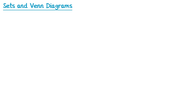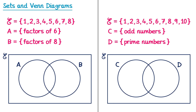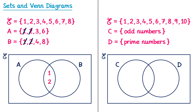Here are two more questions like this for you to try. For the first question, we need the factors of 6 — which are 1, 2, 3, and 6 — and the factors of 8 — which are 1, 2, 4, and 8. Numbers in both sets are 1 and 2, so they go in the middle. Numbers only in set A are 3 and 6. Numbers only in set B are 4 and 8. We've used 1, 2, 3, 4, 6, and 8, leaving 5 and 7 to go outside the circles but still inside the rectangle.